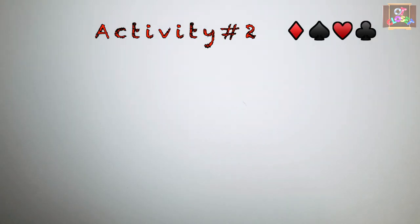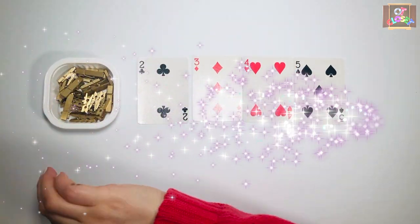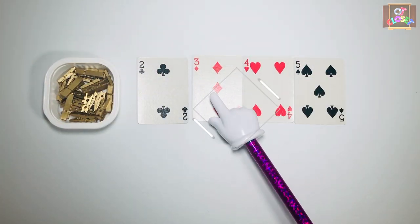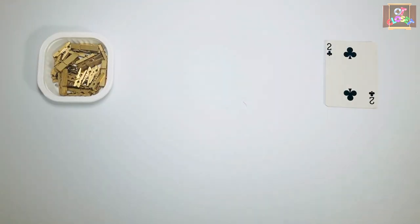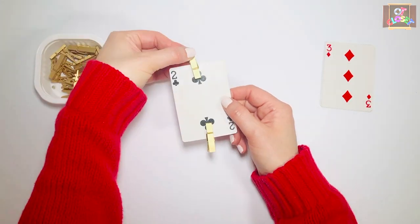Let's do some counting for activity number two. You need clothespins and playing cards. Kids need to match the number of clothespins to the number written on the card.